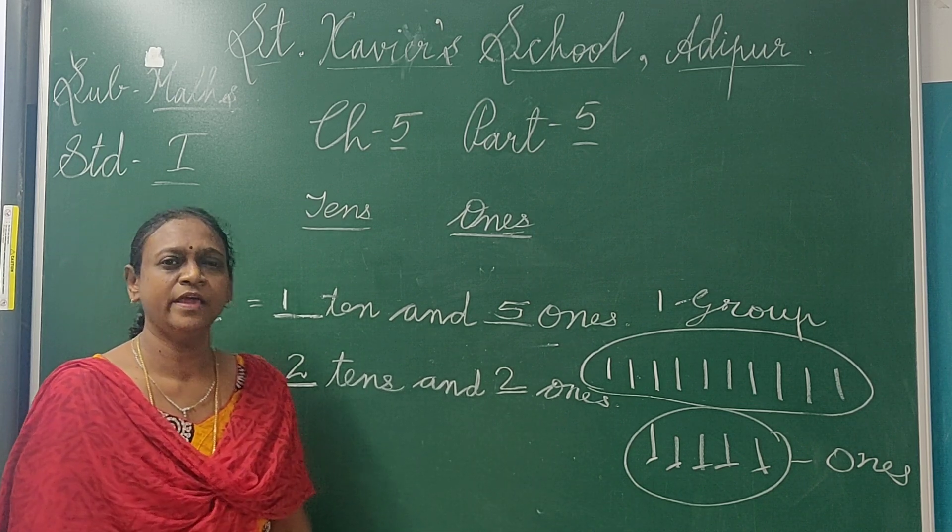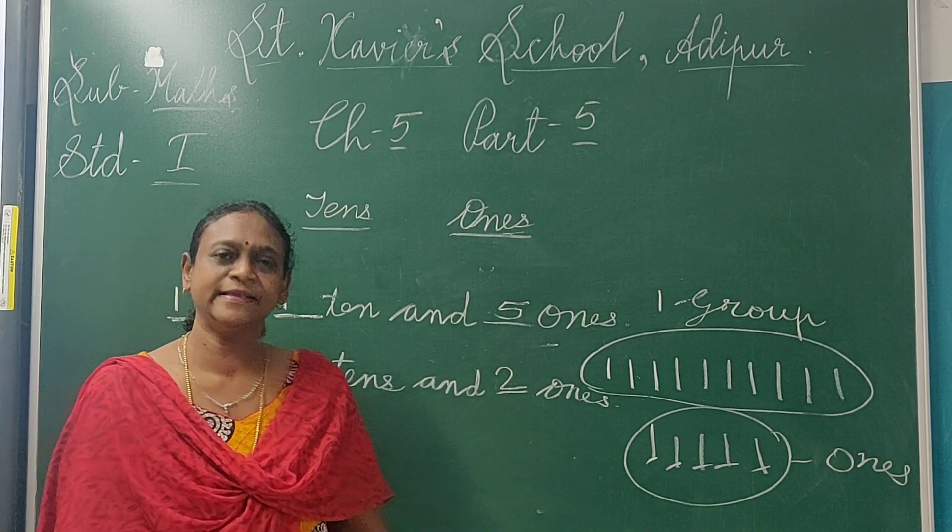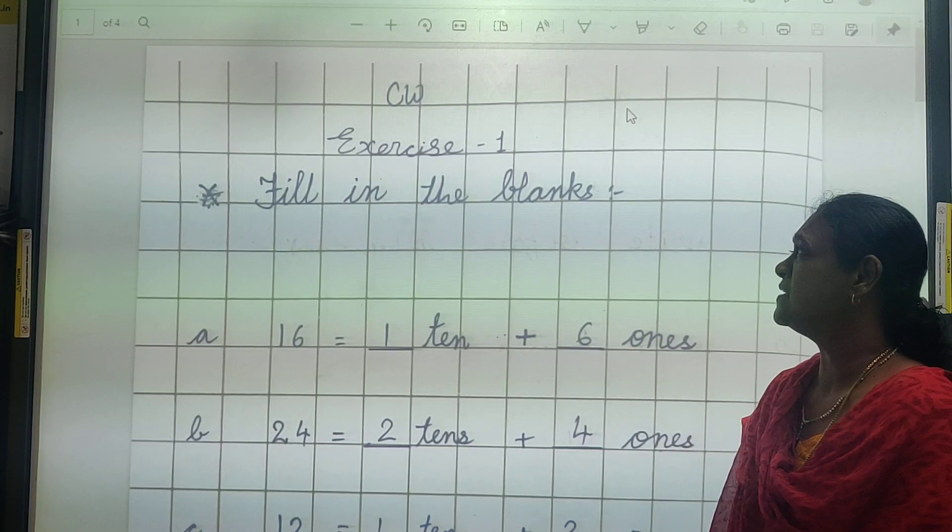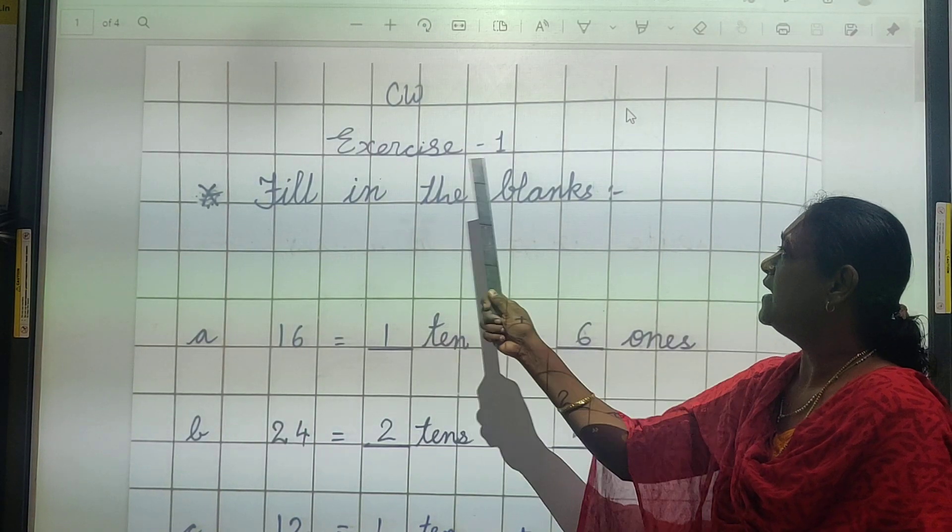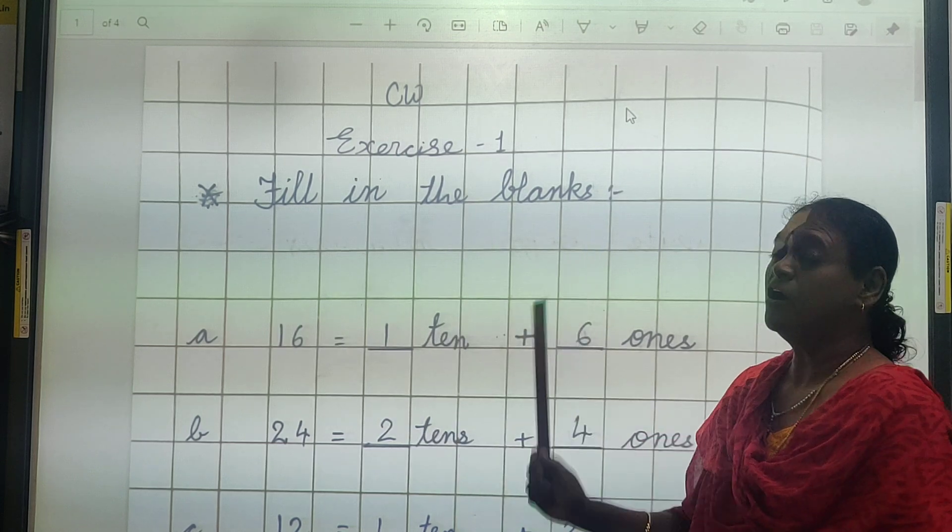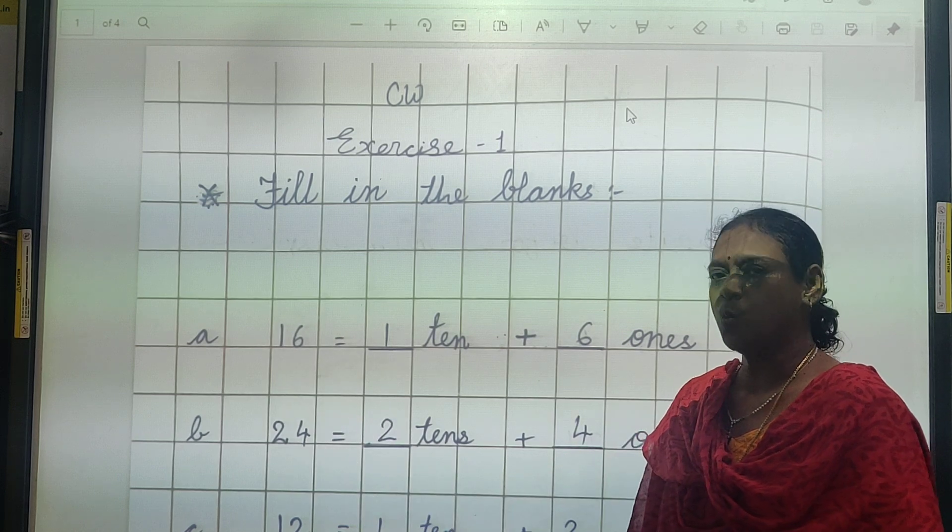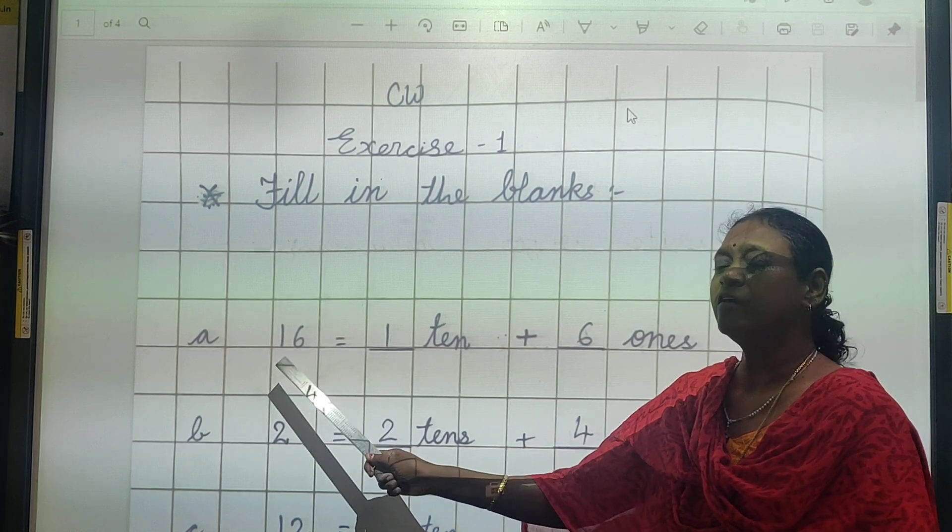Now we have to put dash. Tens kitne hai? 2. And ones, once kitne hai? Also 2. Okay, right side also 2 and left side also 2. Like this way you have to differentiate tens and ones, ones from the given figure.